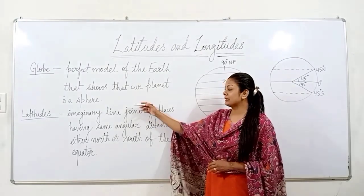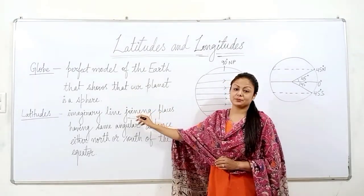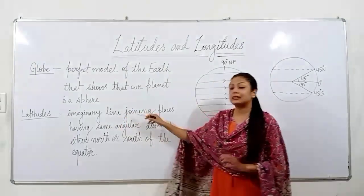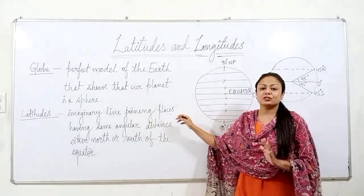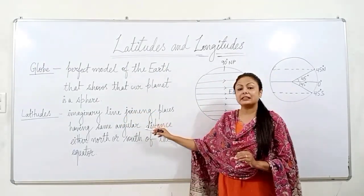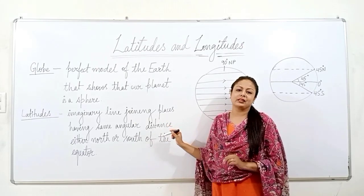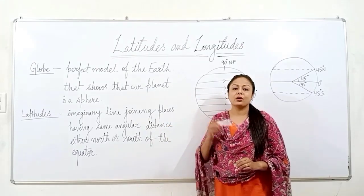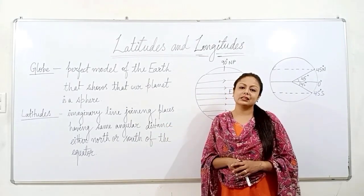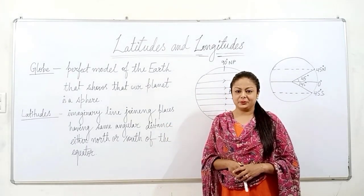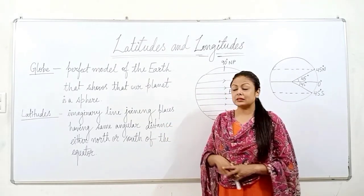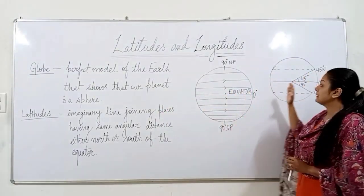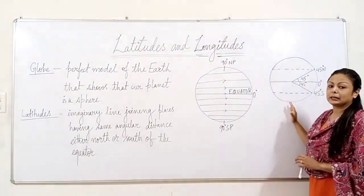So students, before we learn about earth's grid we need to know what are latitudes and what are longitudes. So let's start with latitudes. Latitudes are imaginary lines joining places having same angular distance either north or south of the equator. So let's understand this definition with the help of this diagram.